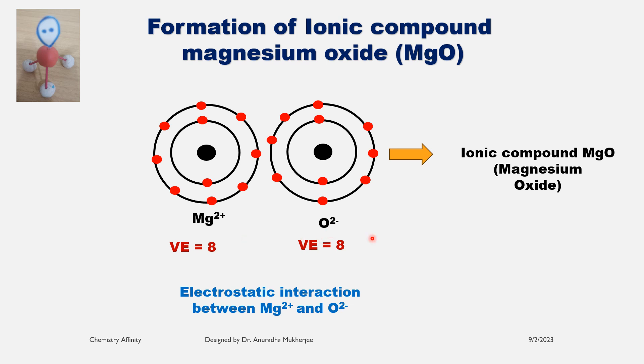Now there will be a strong electrostatic interaction between cation and anion and it will form an ionic compound, magnesium oxide.